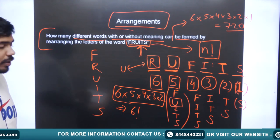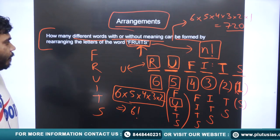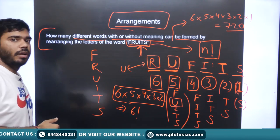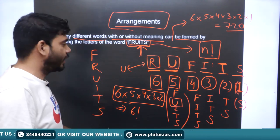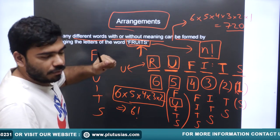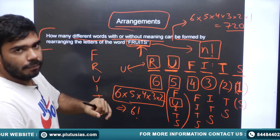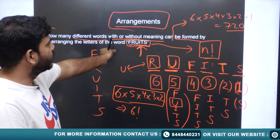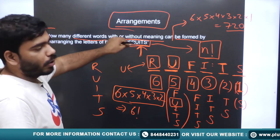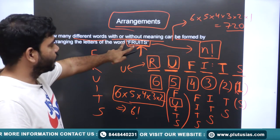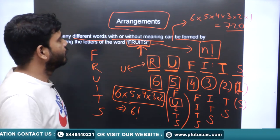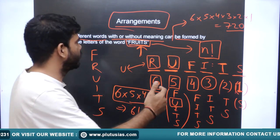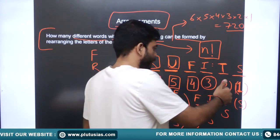So we have 720 number of possibilities. This is how we arrive at the conclusion: if we have an n-letter word where all letters are unique, the number of possible arrangements — with or without meaning — using the letters of the given word will be n factorial. Since we have a six-letter word, the answer is 6! = 720.